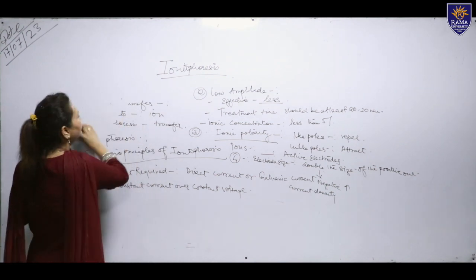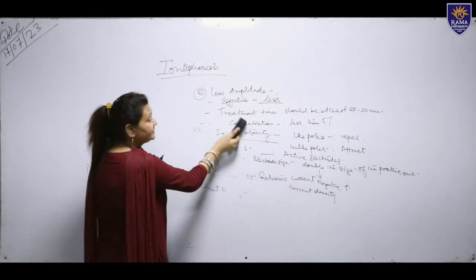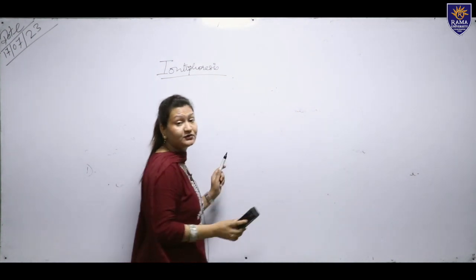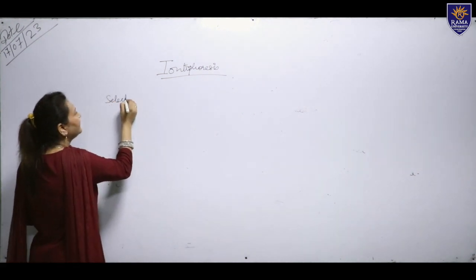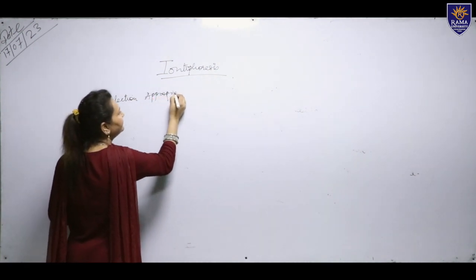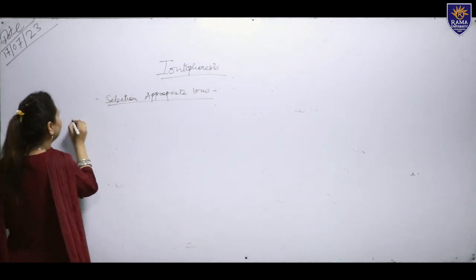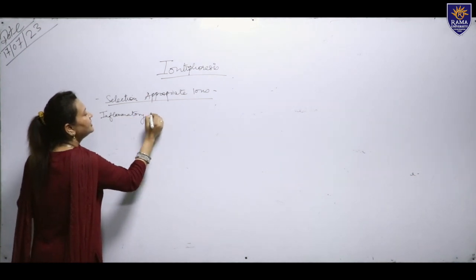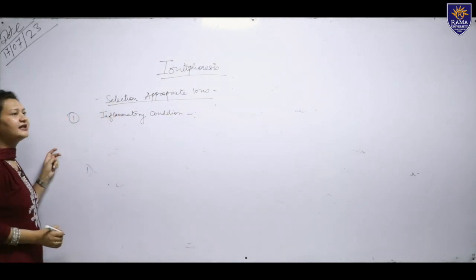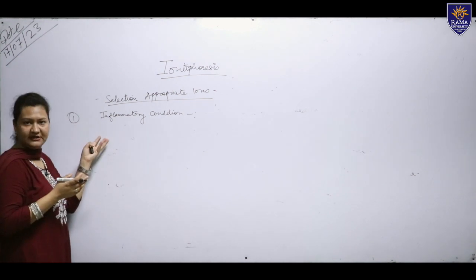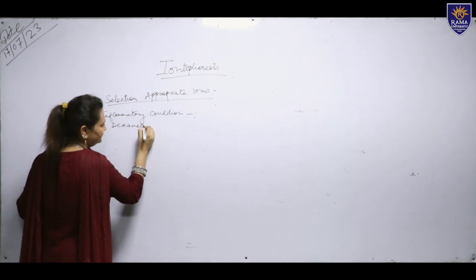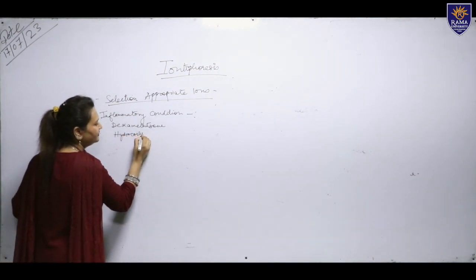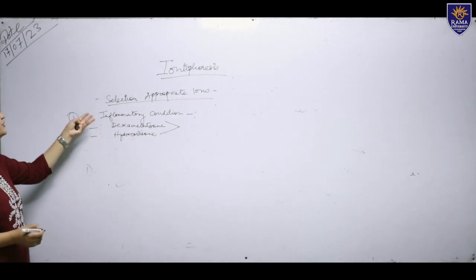The fifth basic principle is the selection of appropriate ions used for delivering in certain conditions. For the inflammatory condition, the ions used are dexamethasone and hydrocortisone. These are the two basic ions used to relieve inflammatory conditions.